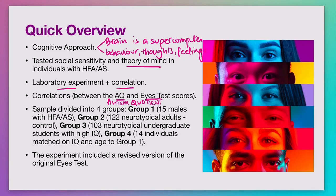This experiment also wanted to figure out if there was a relationship — a correlation — between the Autism Quotient Test and the revised Eyes Test. Remember that the first version of the Eyes Test was already used by Baron Cohen back in the 90s, and so in 2001 he wanted to improve the test, and that was one of the purposes of this experiment as well.